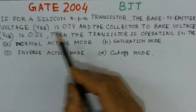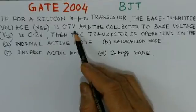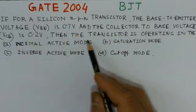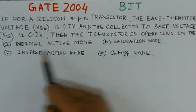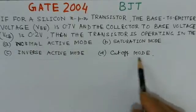if for a silicon NPN transistor the base to emitter voltage Vbe is 0.7V and the collector to base voltage Vcb is 0.2 volts, then the transistor is operated in the normal mode, saturation mode, inverse active mode or cutoff mode.